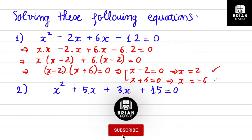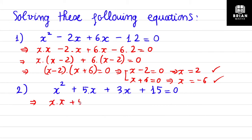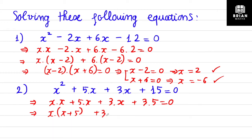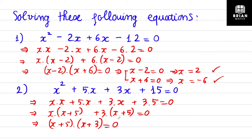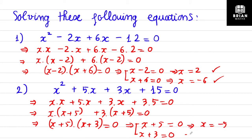The first bracket gives x = 2, and the second gives x = -6. Those are the two solutions. For Question 2: x times x, 5x, 3 times x, and 3 times 5. The first two terms give x outside with (x + 5) inside. The next terms give 3 outside with (x + 5). So (x + 5)(x + 3) = 0, giving x = -5 and x = -3.